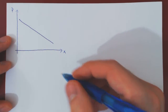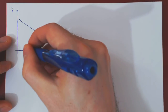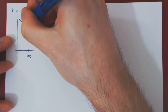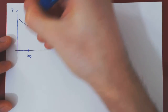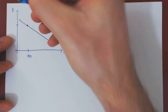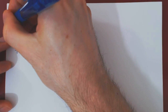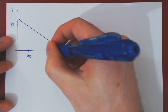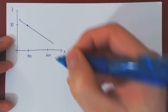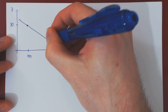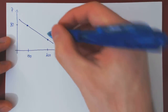Suppose that the two points we're given are: x equals 100 — when consumers are willing to purchase 100 units, the unit price is $80 — and when consumers are willing to purchase 200 units, the unit price is $20.